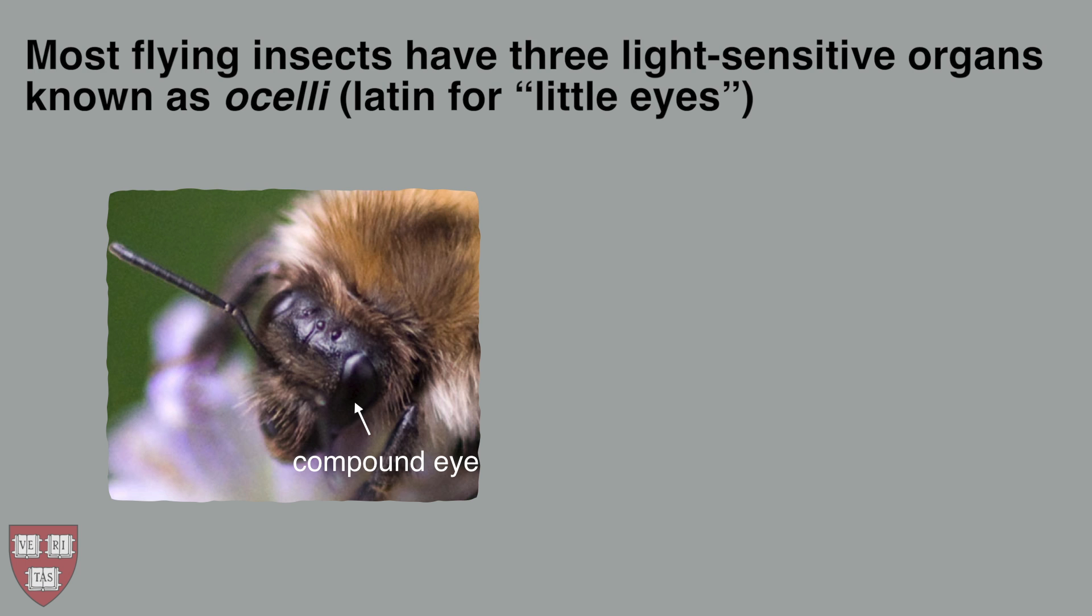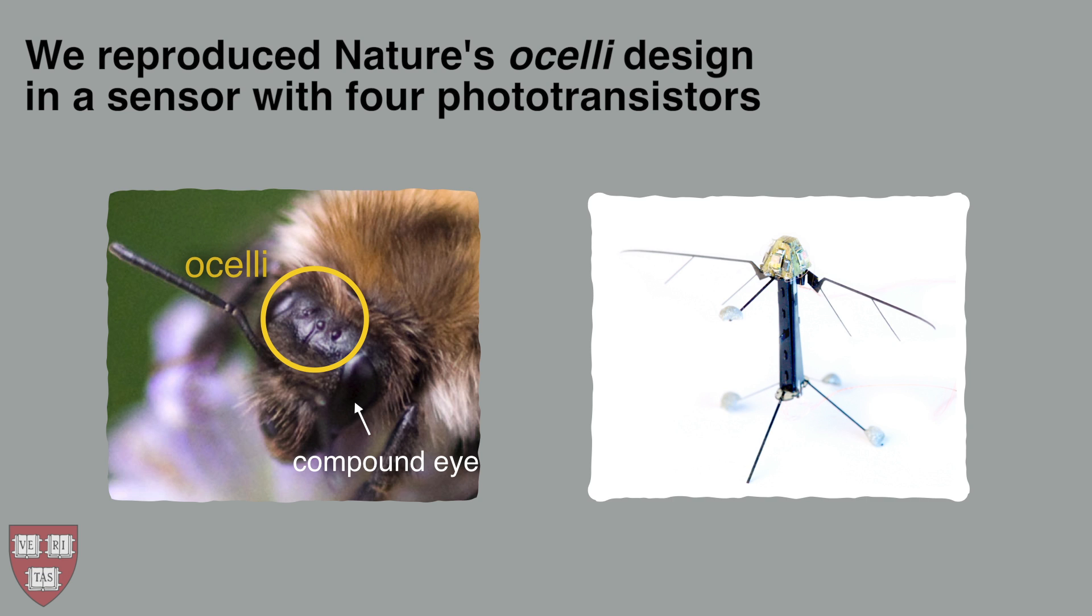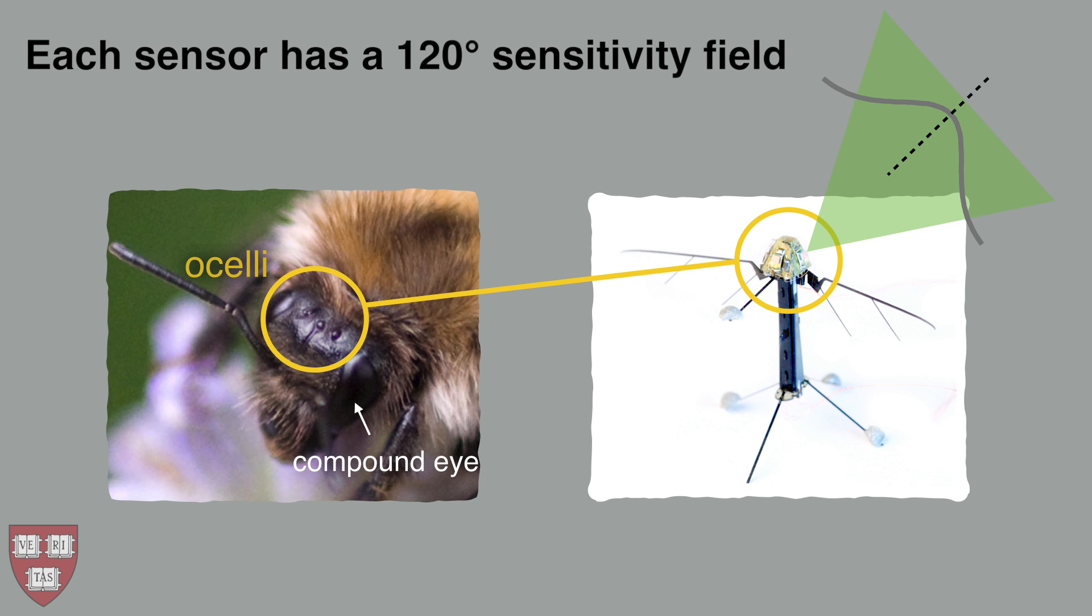In addition to the compound eyes, most flying insects have three light sensors known as the ocelli. We reproduce the ocelli design by creating a sensor composed of four photoreceptors. Each sensor captures light from a large, diffuse area of the visual field.